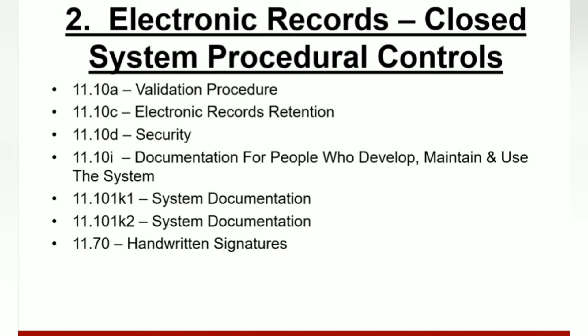The next section covers electronic records for closed system procedural controls. For 11.10A — validation procedure — the system must be validated per company procedure to provide documented evidence that the system ensures accuracy, reliability, and consistent intended performance.